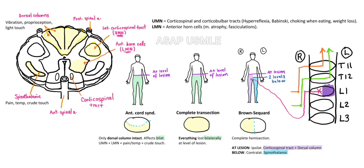Brown-Séquard cord is the most complicated, but it's about to make sense. We have an injury affecting exactly half of the cord. Remember that the corticospinal tract crosses at the medulla, all the way up in the brainstem, so the symptoms will be ipsilateral anywhere in the cord at the level of the lesion. The dorsal column also crosses at the brainstem, so symptoms will again be ipsilateral.